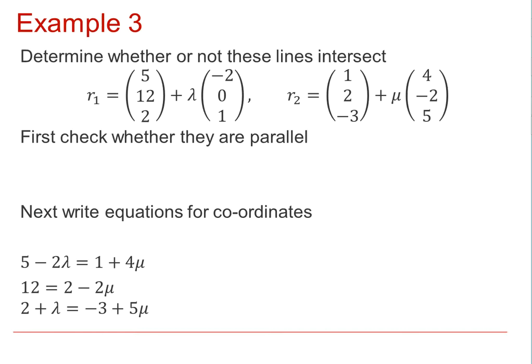So, then they are either they intersect or the lines are skew. Let's check to see if they intersect. If we write equations for the coordinates as we did before, for example for x, 5 minus 2 lambda equals 1 plus 4 mu. For y, 12 equals 2 minus 2 mu. And for z, 2 plus lambda equals minus 3 plus 5 mu. Then we will have three equations in two unknowns, which would be easy to solve simultaneously.